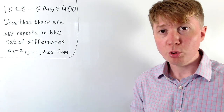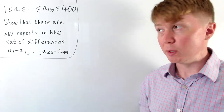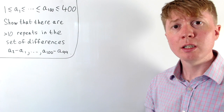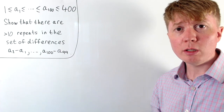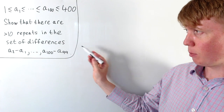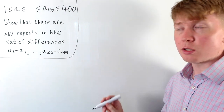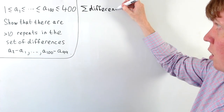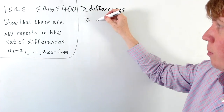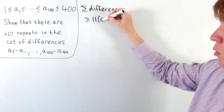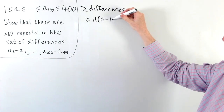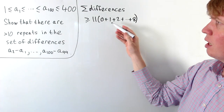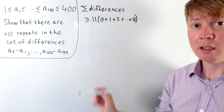We'll now check whether we can improve this bound — could there also have to be more than 11 repeats? If we assume at most 11 repeats, we apply the same argument: making the sum of differences as small as possible, we include 11 repeats of 0, 11 repeats of 1, 11 of 2, and so on up to 11 of 8, which covers all 99 differences.